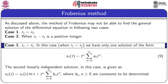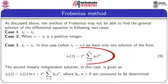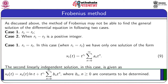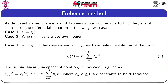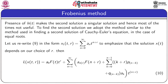In Case 1 where r₁ = r₂, we have only one solution of the form x₁(t) = t^(r₁)·Σ(n=0 to ∞) aₙtⁿ. The second linearly independent solution is x₂(t) = x₁(t)·log(t) + t^(r₁)·Σ(n=0 to ∞) bₙtⁿ, where the bₙ are constants to be determined. The presence of log t makes this second solution singular, and it is obtained using a method similar to that used for Cauchy–Euler equations in the case of equal roots.